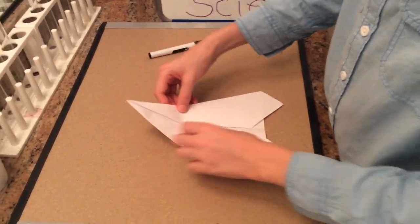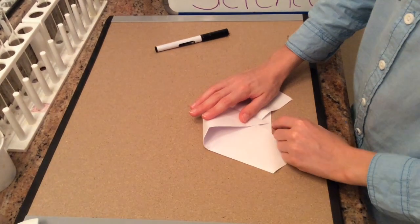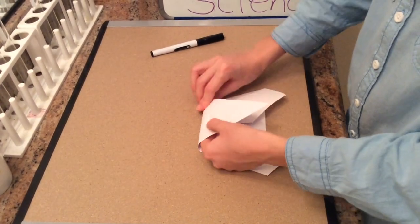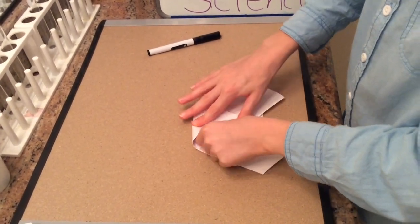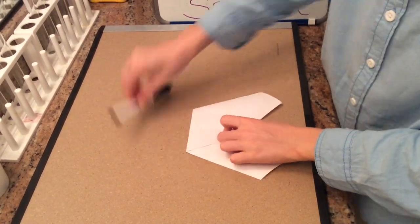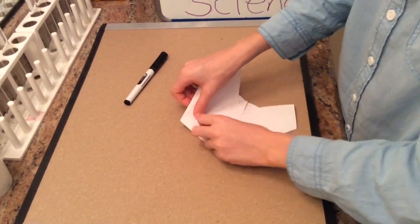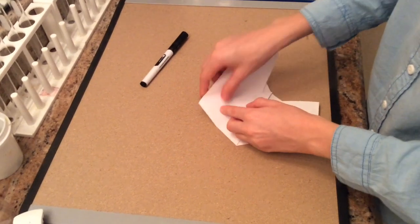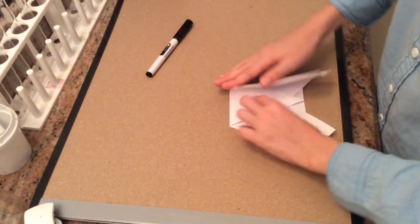So now we're going to take our top point and fold it down to the bottom of the paper. So now we will crease that fold and take this side and we will fold in to the center line one more time.